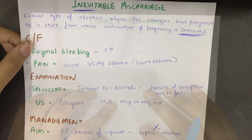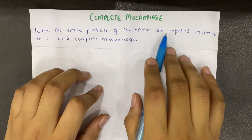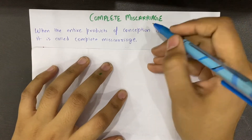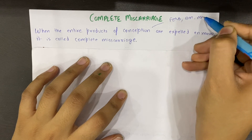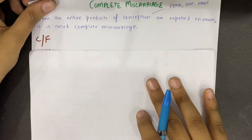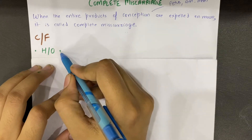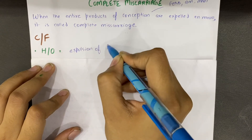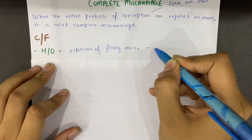Next is complete miscarriage. When the entire products of conception are expelled, it is called complete miscarriage — including fetus, amniotic membranes, placenta, everything. The clinical features: first and most importantly, the patient will give a history of expulsion of a fleshy mass from the vagina.